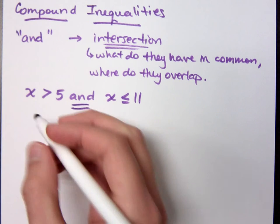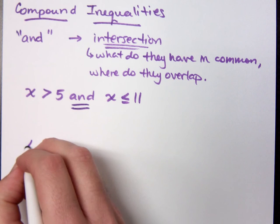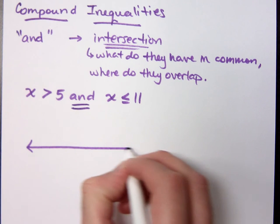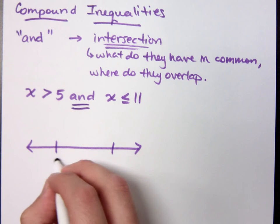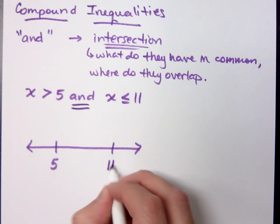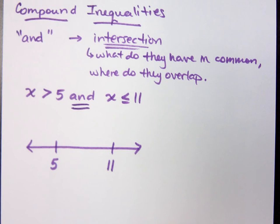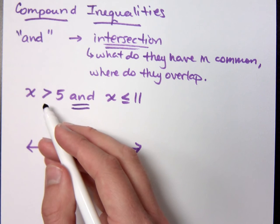One of the ways that we have for graphing this out is making sure we understand where the numbers are that we're dealing with, which of course would be 5 and 11. But what does it mean for x is greater than 5?